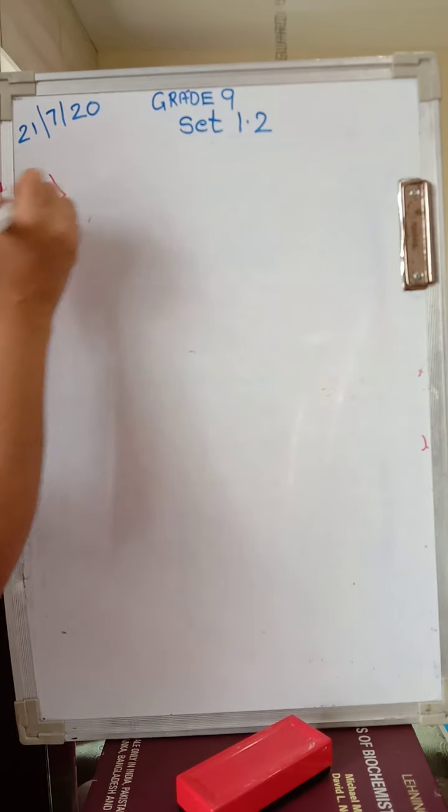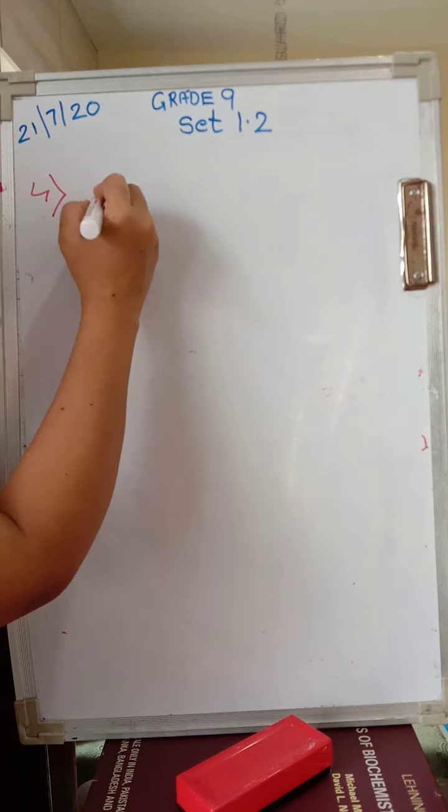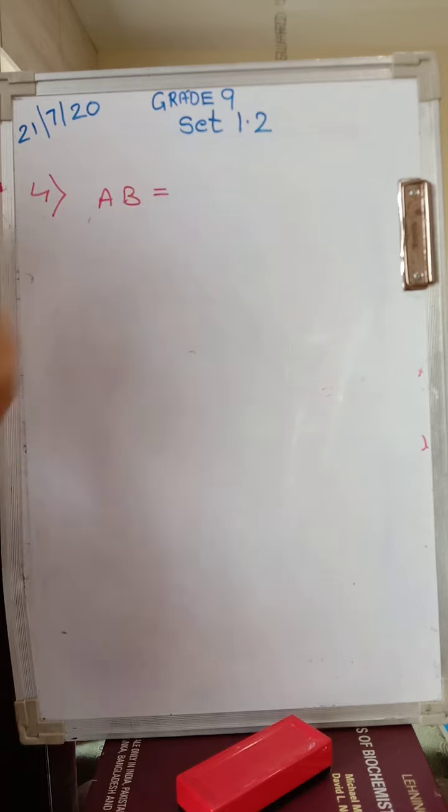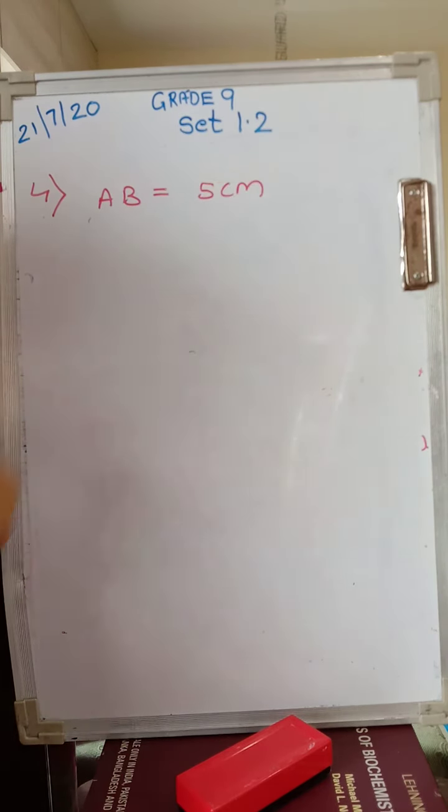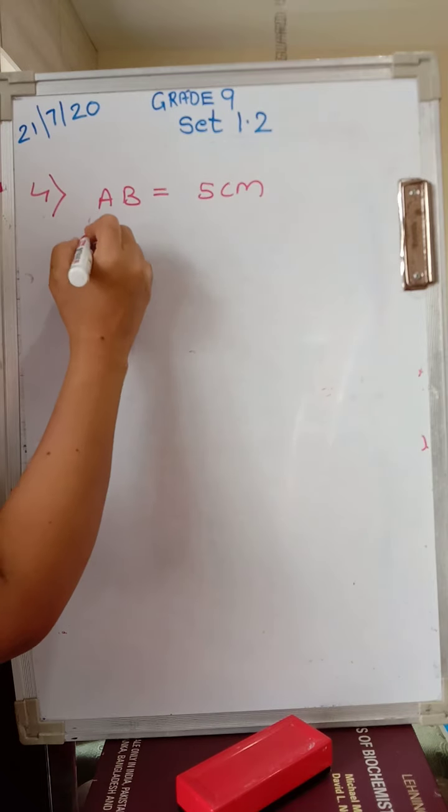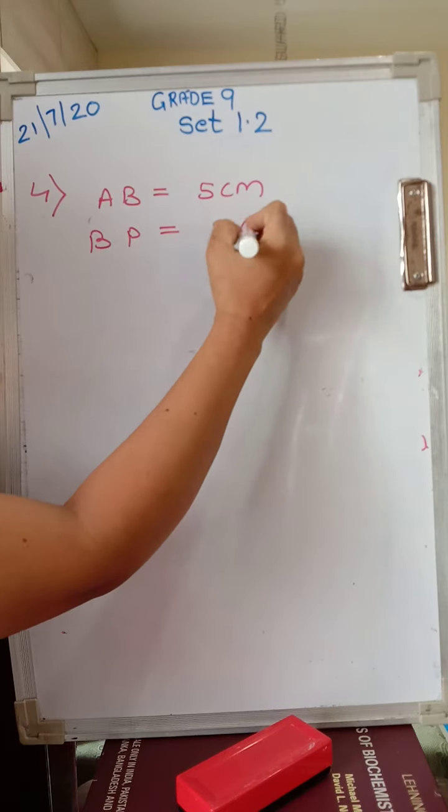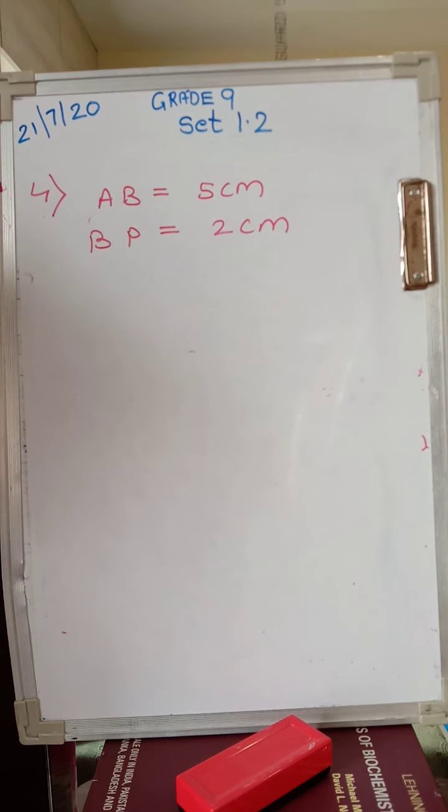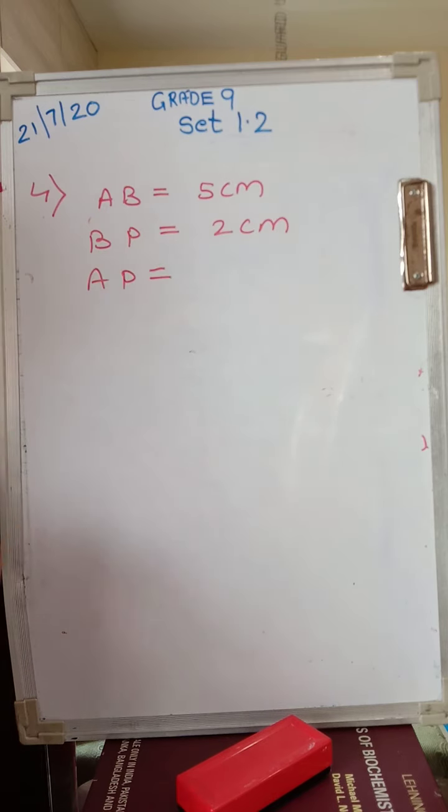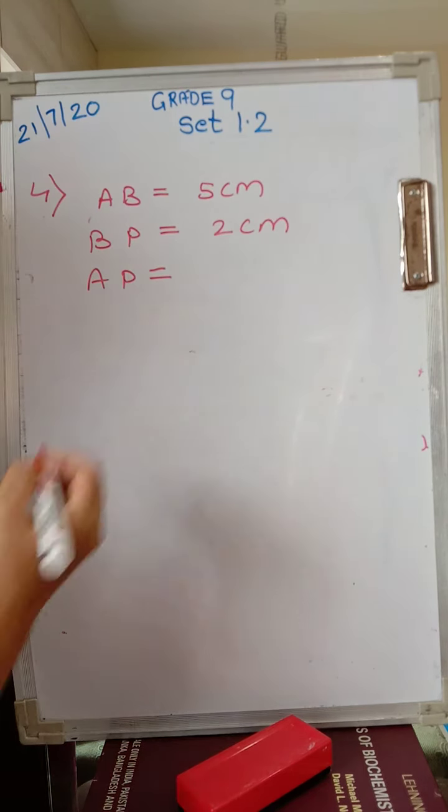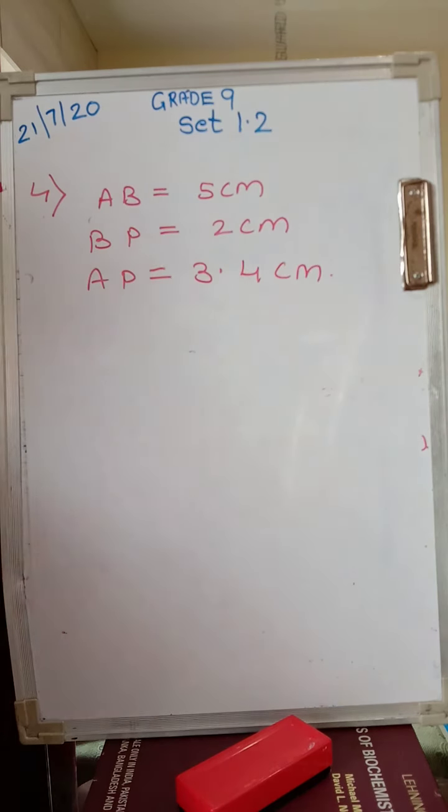Question number 4 says that they have given AB, BP, and AP. AB is 5 centimeters, they have given BP equals 2 centimeters, and they have given AP equals 3.4 centimeters.